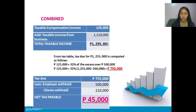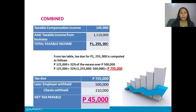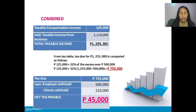Since employer withheld and clients withheld amounts are given, we are going to deduct those from the tax due. Tax due 755,000 less employer withheld 500,000 less clients withheld 210,000, so our net tax payable for the whole year on the combined income is 45,000.